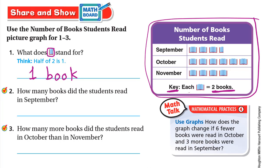Number 2: how many books did the students read in September? In September, each symbol means 2 books, so we count by 2: 2, 4, 6, and half of the book means 1 book, so it's 7. The total for September is 7.